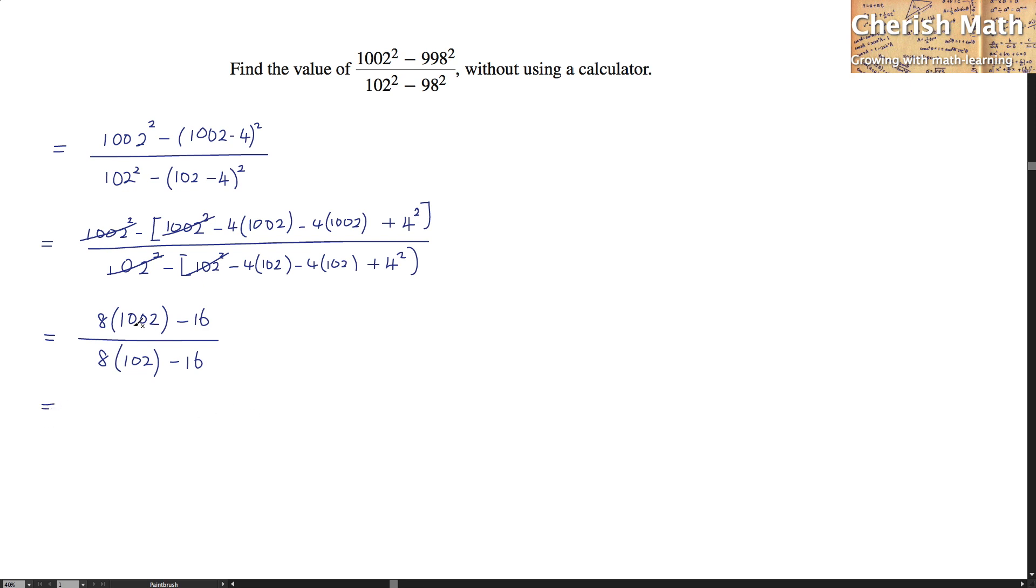Now we are trying to factor the 8 from the equation here. So that turns 1002 minus 2. It happens to the denominator as well. 102 minus 2. And I try to simplify for this part.